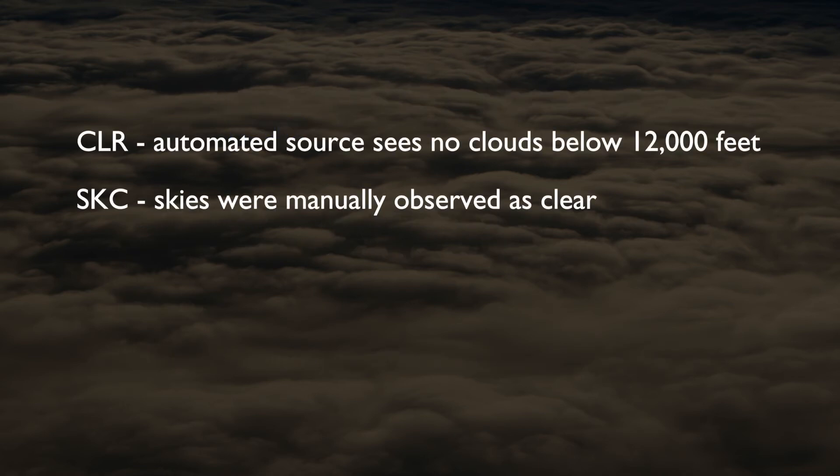CLR in a METAR is used to indicate an automated weather source reports no clouds observed below 12,000 feet above the ground. If the METAR were to say SKC, this would mean the skies were manually observed to be clear.